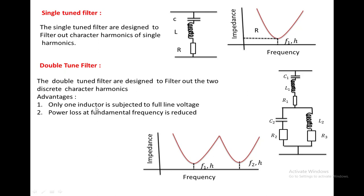The advantages of the double tuned filter are: only one inductor is subjected to full line voltage, the power losses at fundamental frequency are reduced, and in one filter you can filter out two harmonic frequencies.